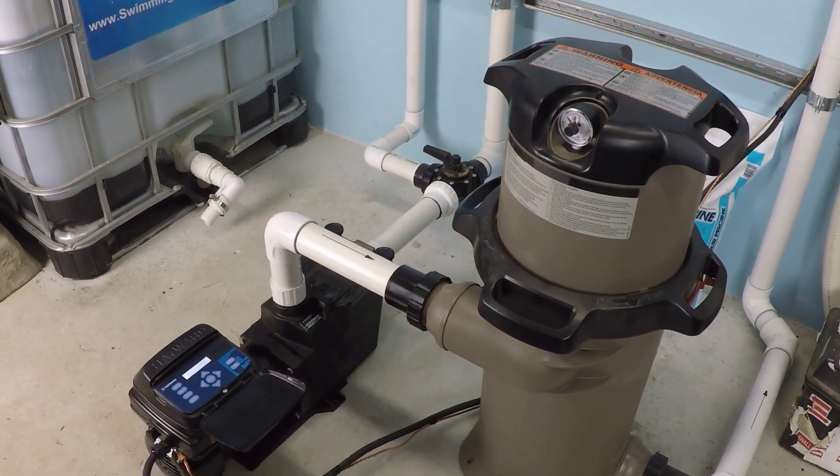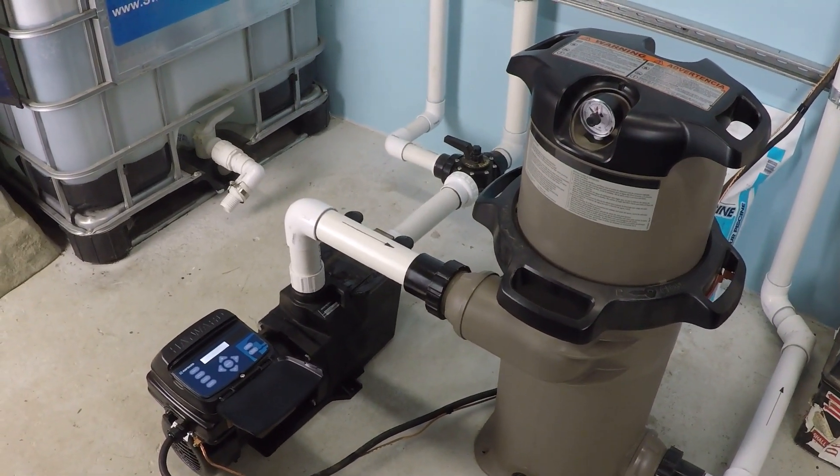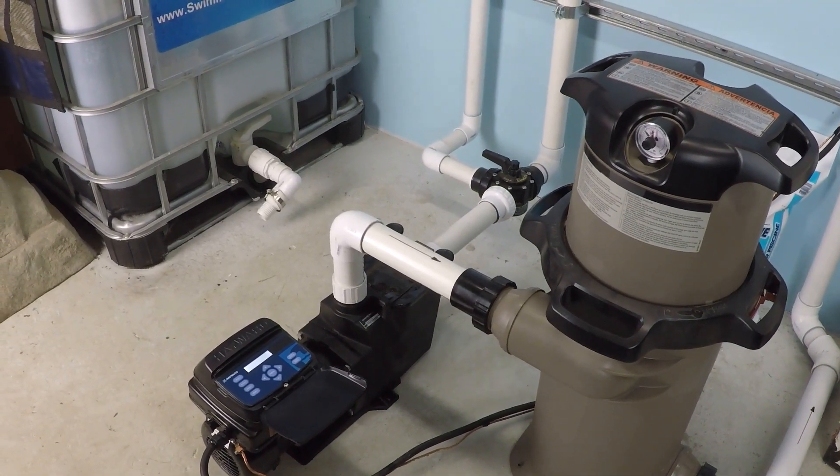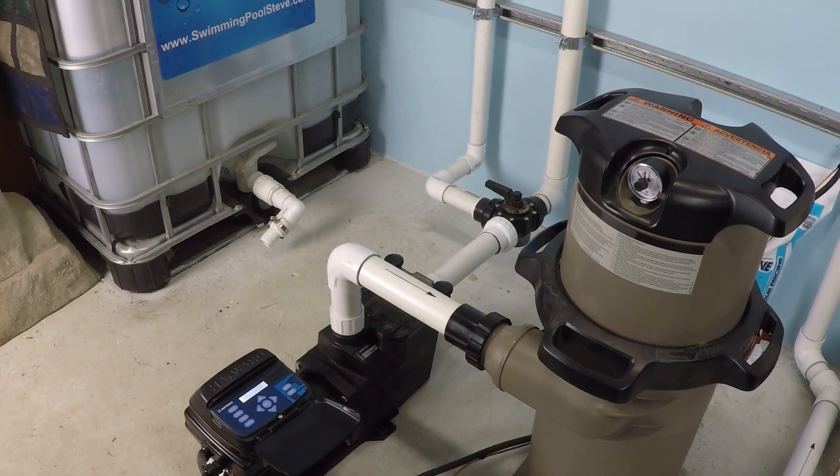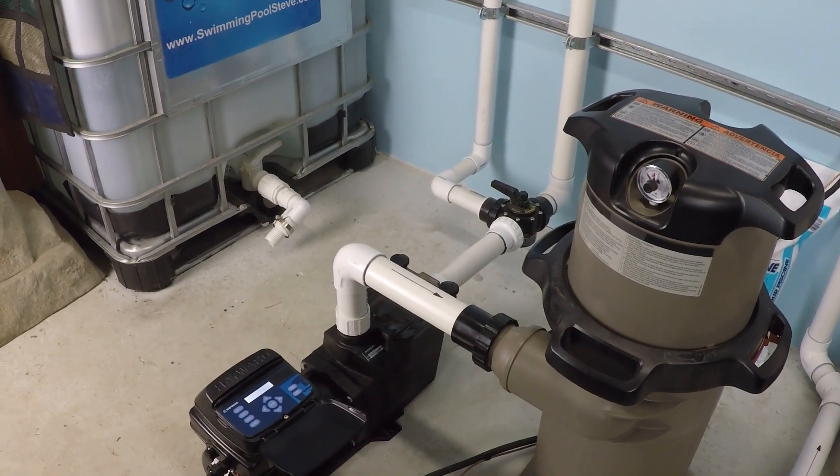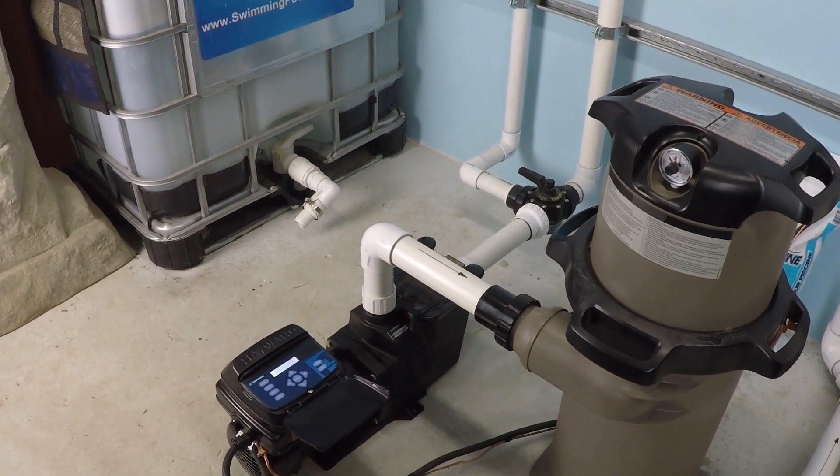All right, we are designing a filtration schedule for a swimming pool that is a 16 by 32 foot swimming pool, or approximately 15,000 gallons. That's what we're going to be working with today.